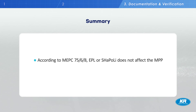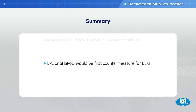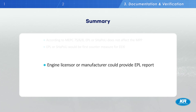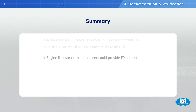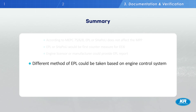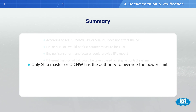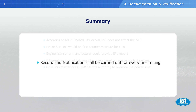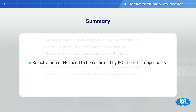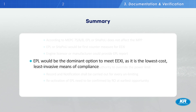To summarize: EPL does not need to consider minimum propulsion power. EPL or shaft power limitation may be the first action to consider to satisfy EEXI. The engine licensor or manufacturer can be asked to provide EPL reports. The EPL setup may vary depending on which control system is configured — mechanical, electrical, or non-conventional. Only the master or officer on duty can authorize the use of reserve power. Every power unlimiting event should be recorded and notified to the administration or RO, and RO confirmation is required each time the power limit is reset. It is expected that many vessels will not achieve their EEXI targets without the use of EPL, and EPL or shaft power limitation is considered the least expensive and least cumbersome way to comply with regulations.